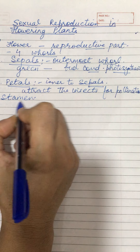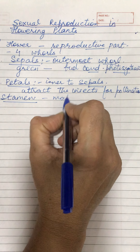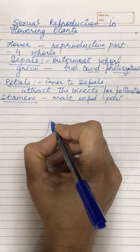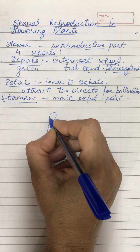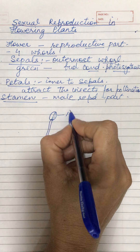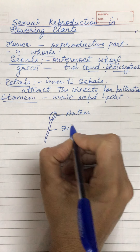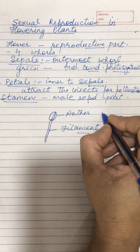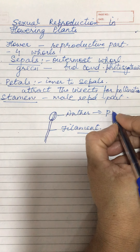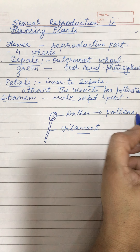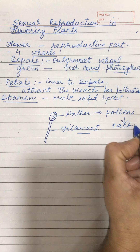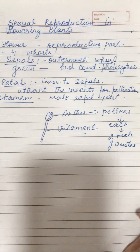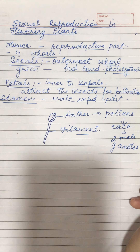The third structure is the stamen. The stamen is the male reproductive part and it consists of the filament and anther. Inside the anther there are anther lobes where pollen grains develop. Each pollen grain forms two male gametes.